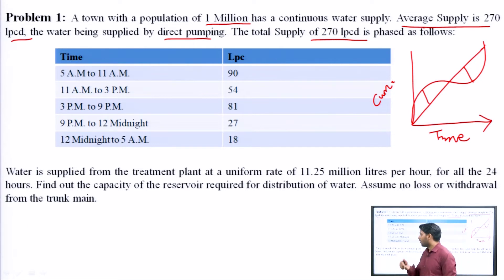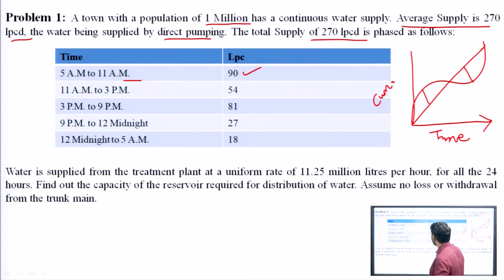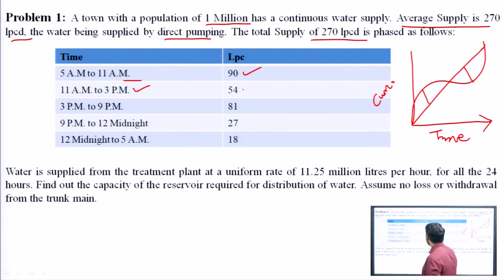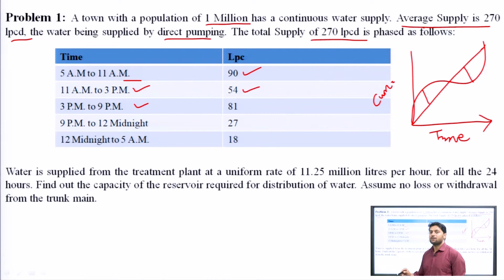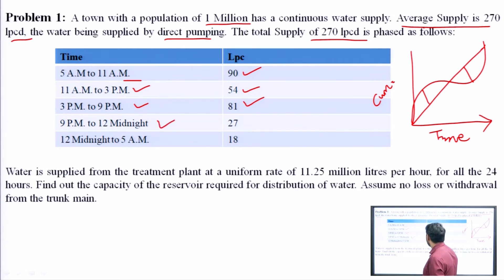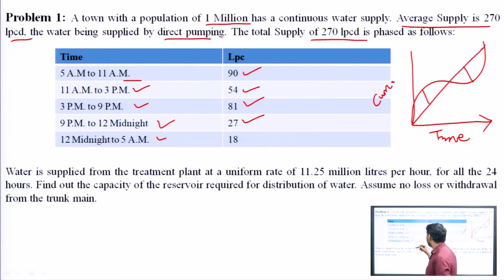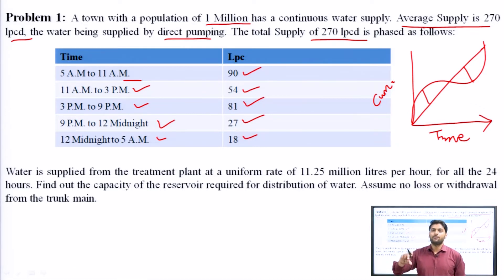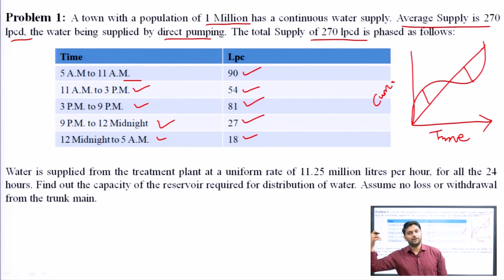The phased supply is as follows: from 5 AM to 11 AM, the water supply is 90 LPCD; from 11 AM to 3 PM, it is 54 liters per capita; from 3 PM to 9 PM, it is 81 liters per capita; from 9 PM to 12 midnight, it is 27 liters per capita; and from 12 midnight to 5 AM, it is 18 liters per capita.